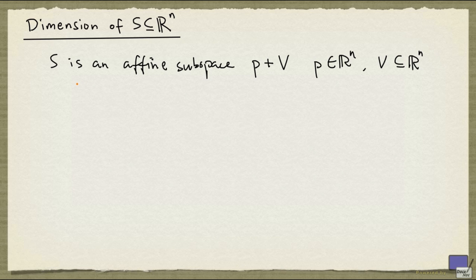From this, we can define the dimension of S as the dimension of the underlying vector space V. So the dimension of S in this case is defined to be equal to the dimension of V.